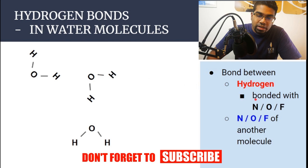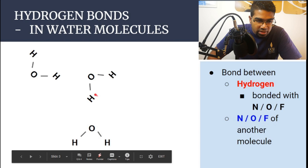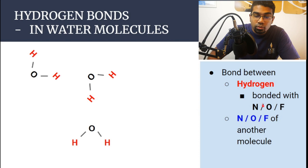The second requirement is there has to be another nitrogen, oxygen, or fluorine atom in another molecule. So for example, this hydrogen is bonded to oxygen — that's the first requirement — and then we have the oxygen of another molecule. This hydrogen and this oxygen is where hydrogen bonds are going to form.